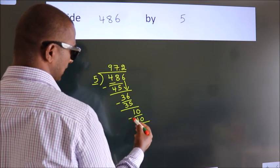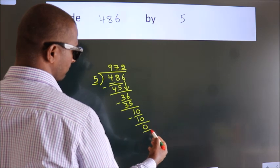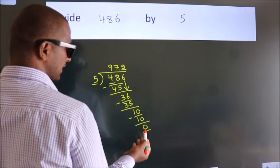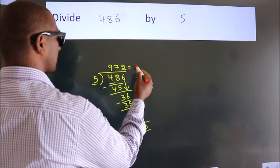Now, we subtract. We get 0. We got remainder 0. So, this is our quotient.